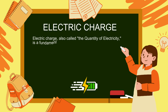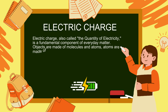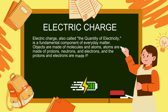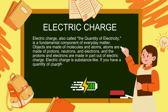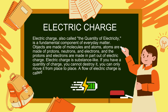Electric charge, also called the quantity of electricity, is a fundamental component of everyday matter. Objects are made of molecules and atoms. Atoms are made of protons, neutrons, and electrons, and the protons and electrons are made in part out of electric charge. Electric charge is substance-like — if you have a quantity of charge, you cannot destroy it; you can only move it from place to place. A flow of electric charge is called electric current.